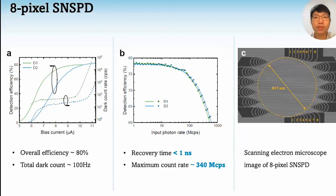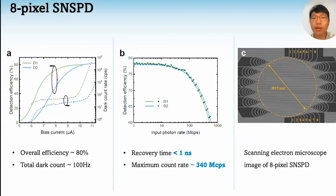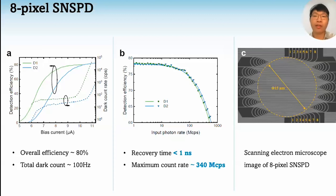Another important trait of this work is that we introduce multi-pixel superconducting nanowire single-photon detectors to our QKD system. These two 8-pixel detectors align the meandering nanowires in parallel. Therefore, the total efficiency, which is around 80%, remains almost the same as normal detectors. In the meanwhile, each nanowire in this detector is shorter, leading to smaller dead time. Moreover, in the multi-pixel SNSPDs, when one pixel is dead, others can still fire when photons come. As a result, the multi-pixel device largely improves the recovery time of our system over a single-pixel device. The recovery time is shorter than one nanosecond, realizing a maximum count rate of 340 megacounts per second.